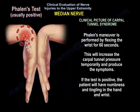If the Phalen's test is positive, the patient will have numbness and tingling in the hand and the wrist.